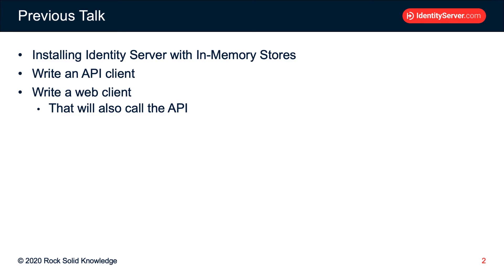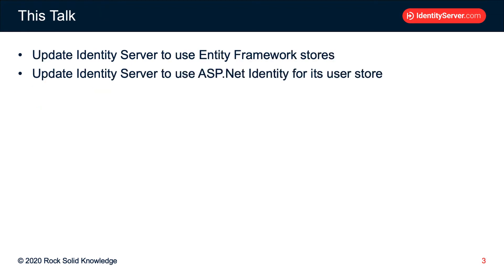In a previous talk in this series, we looked at installing Identity Server 4 and using in-memory stores. We wrote an API client and a web client, and we showed the web client calling the API. In this talk, we'll update that instance of Identity Server to use Entity Framework Stores, and we'll also update Identity Server to use ASP.NET Identity for its user store.